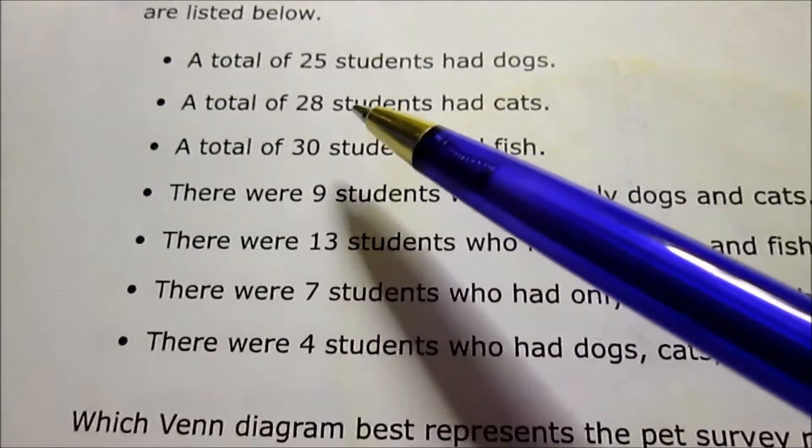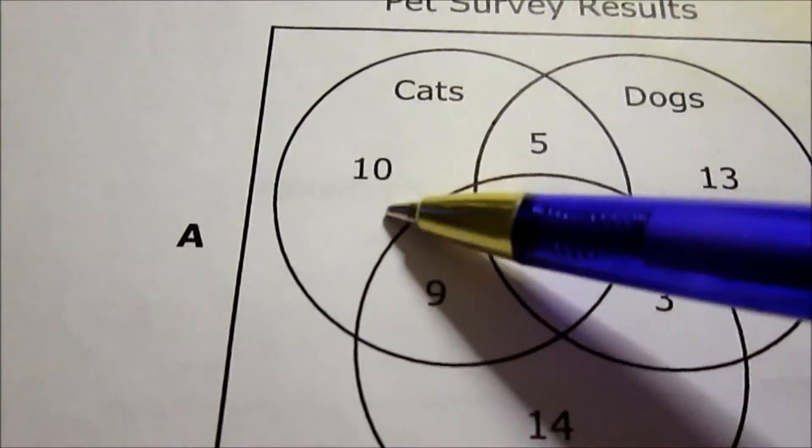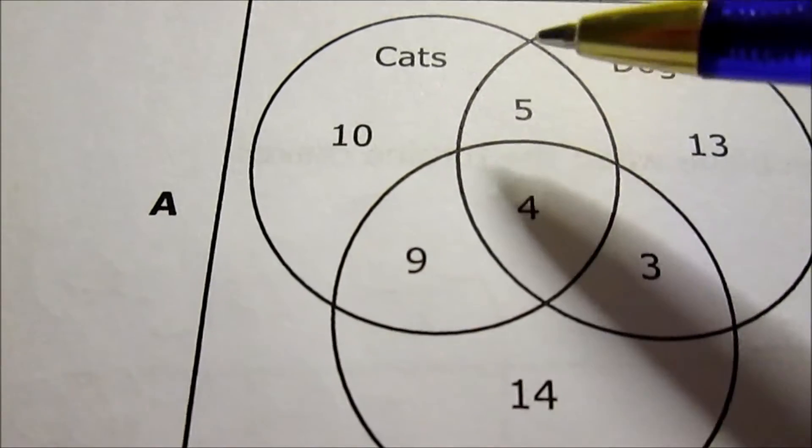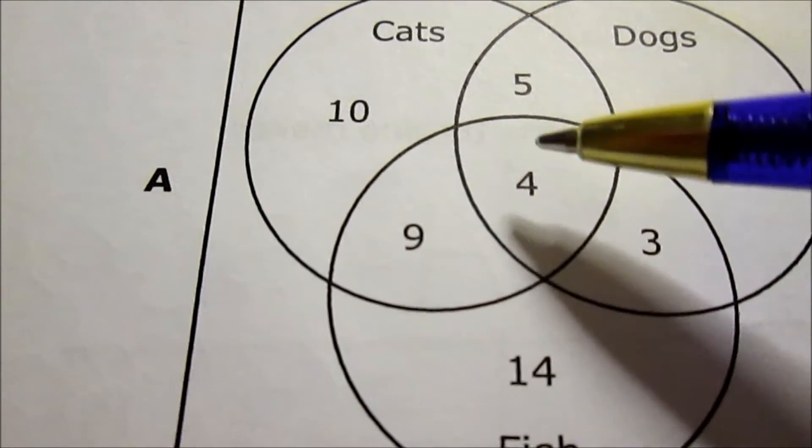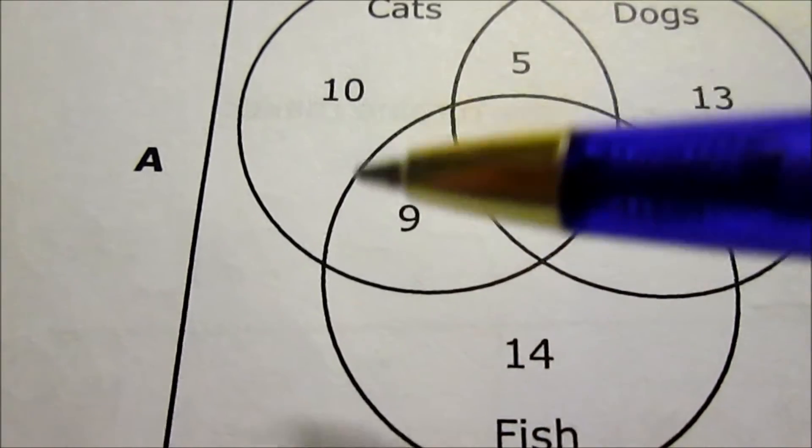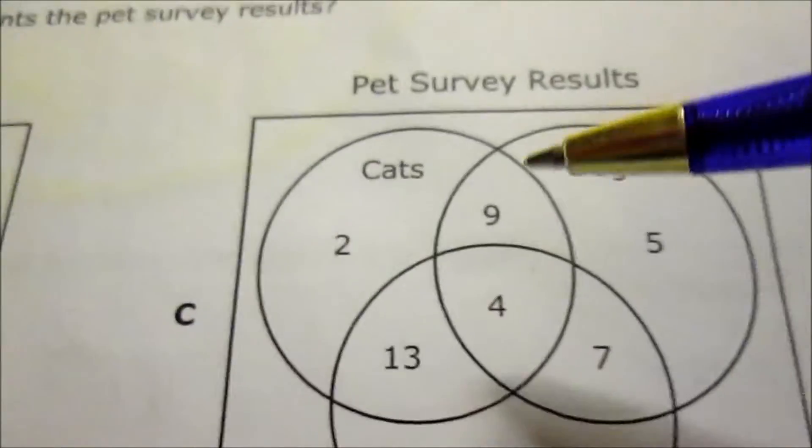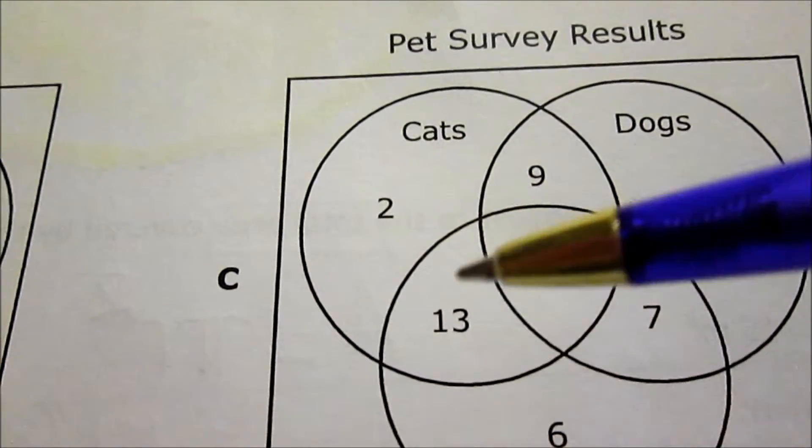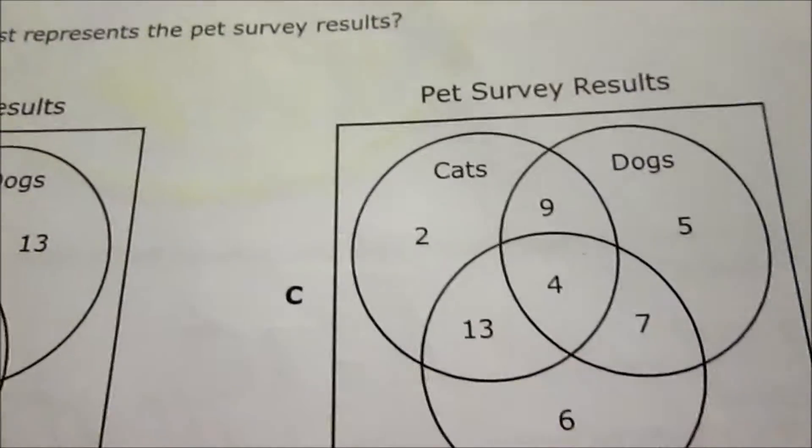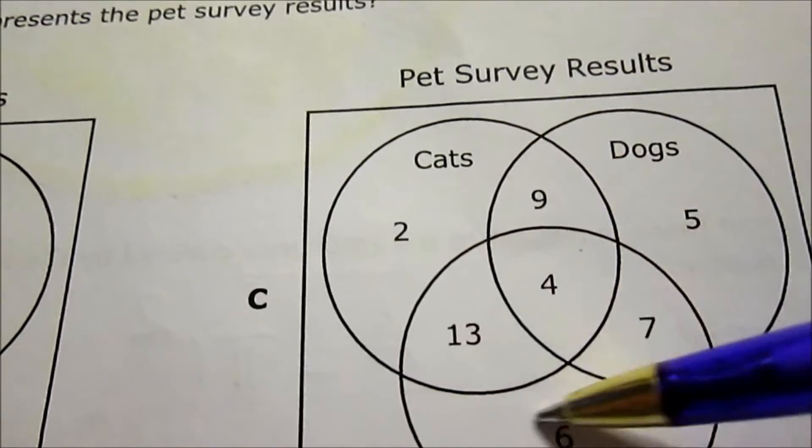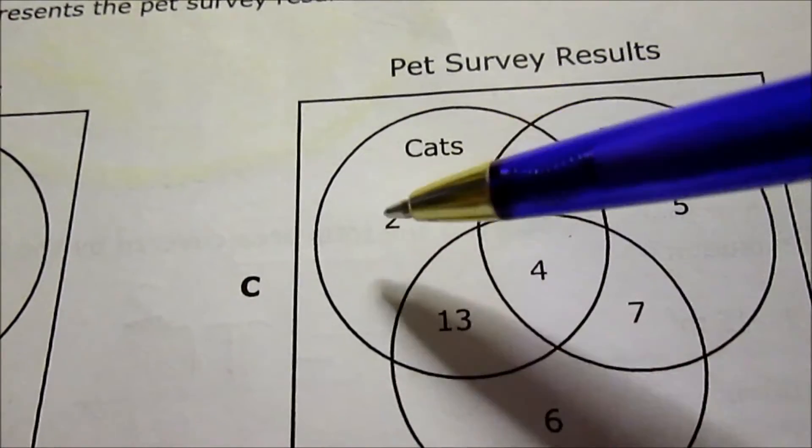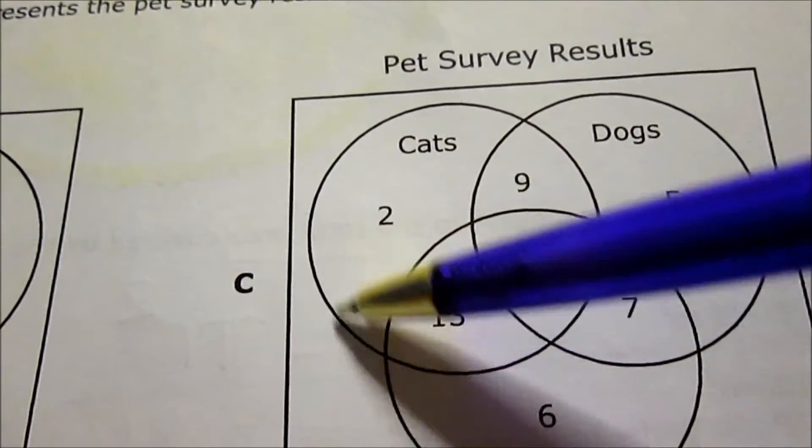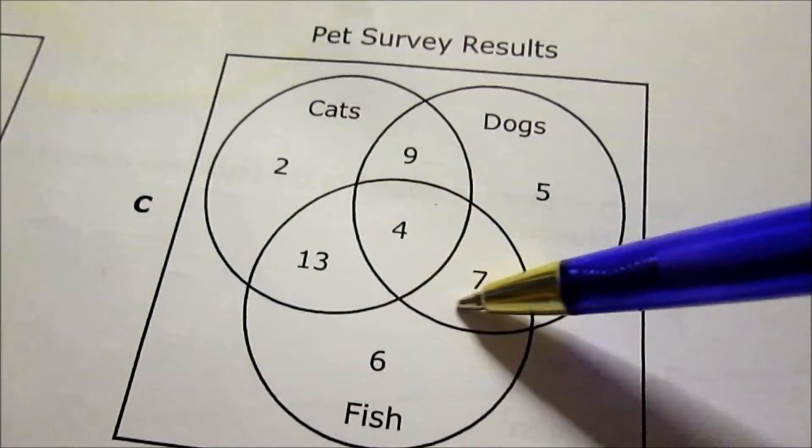I look at the next statement to check. 28 students had cats. For diagram A: 10 plus 5 is 15, 15 plus 4 is 19, 19 plus 9 is 28. Over here in C: 2 plus 9 is 11, 11 plus 4 is 15, 15 plus 13 is 28. Remember, the total that have cats includes all the numbers in the whole cat circle, even if they're in another circle as well.